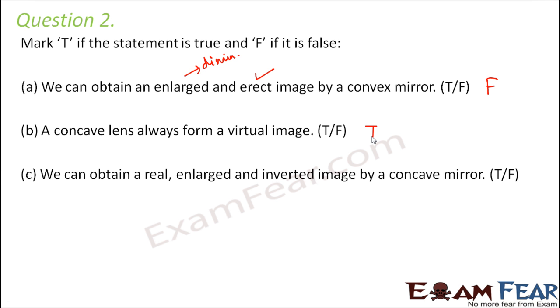We can obtain a real, enlarged and inverted image by a concave mirror. Yes that is also true because in concave mirror you get different types of images. You can form real images, you can also form virtual image, you can also form enlarged, you can also form diminished image, you can even form image of the same size as that of the object.